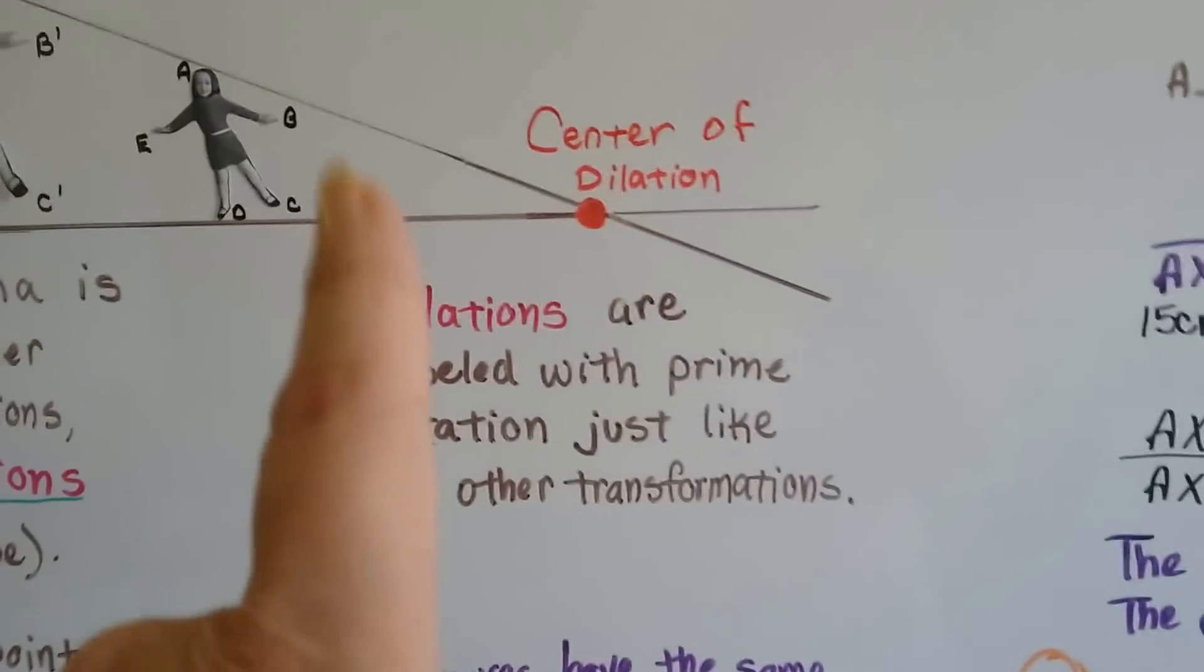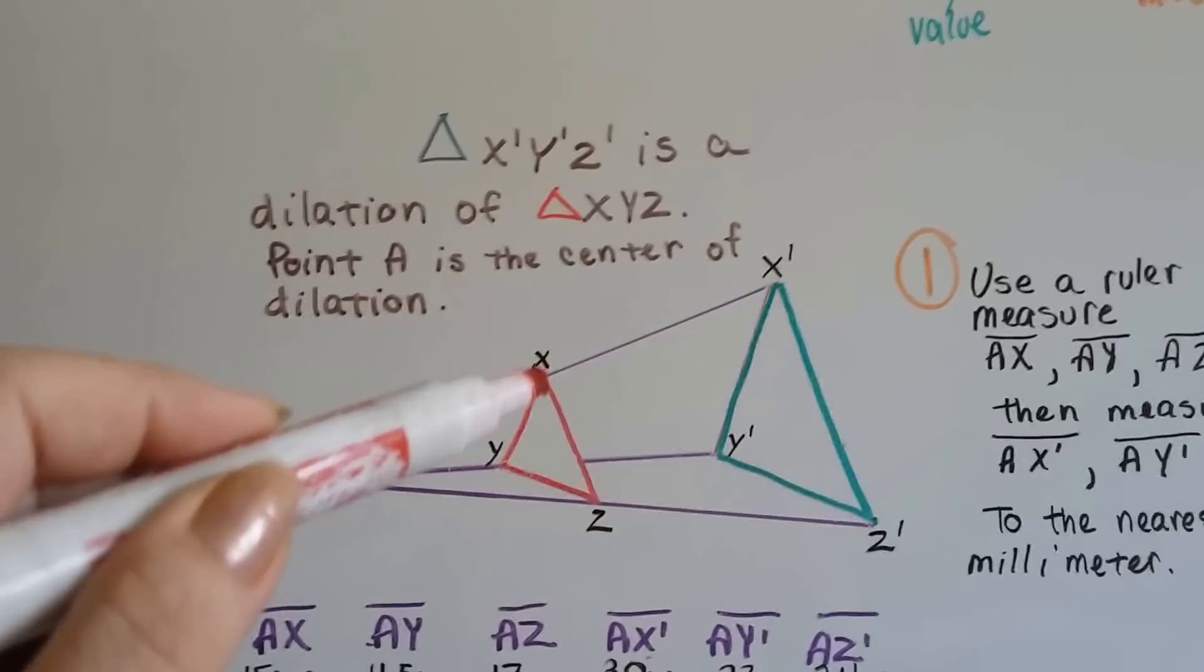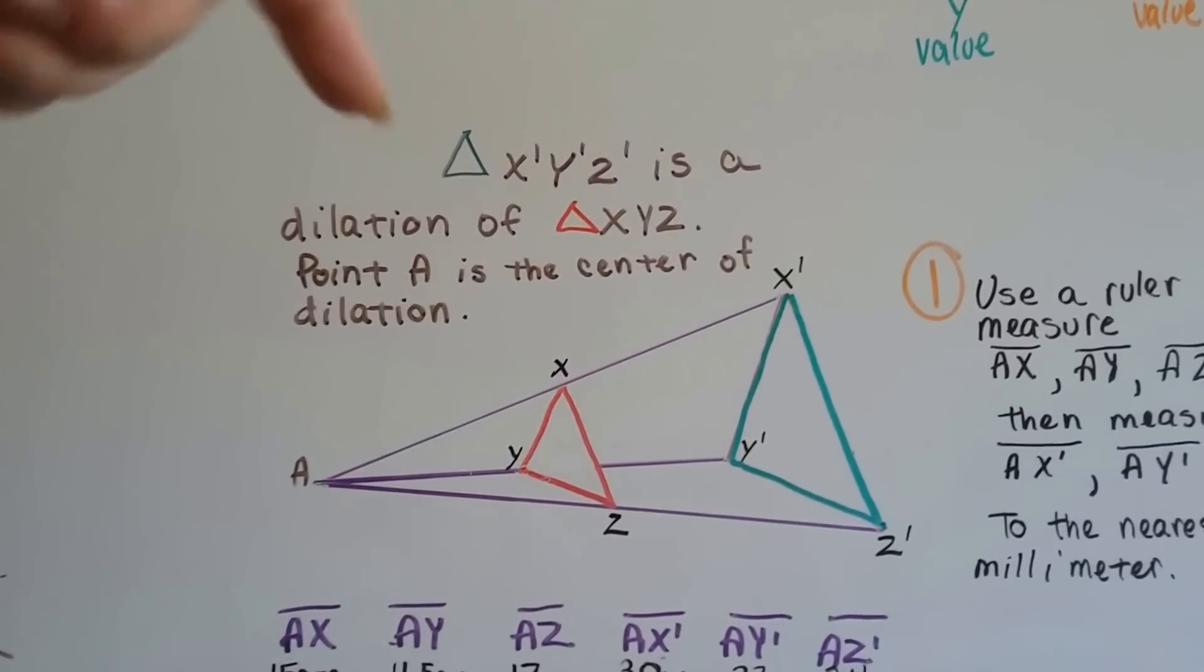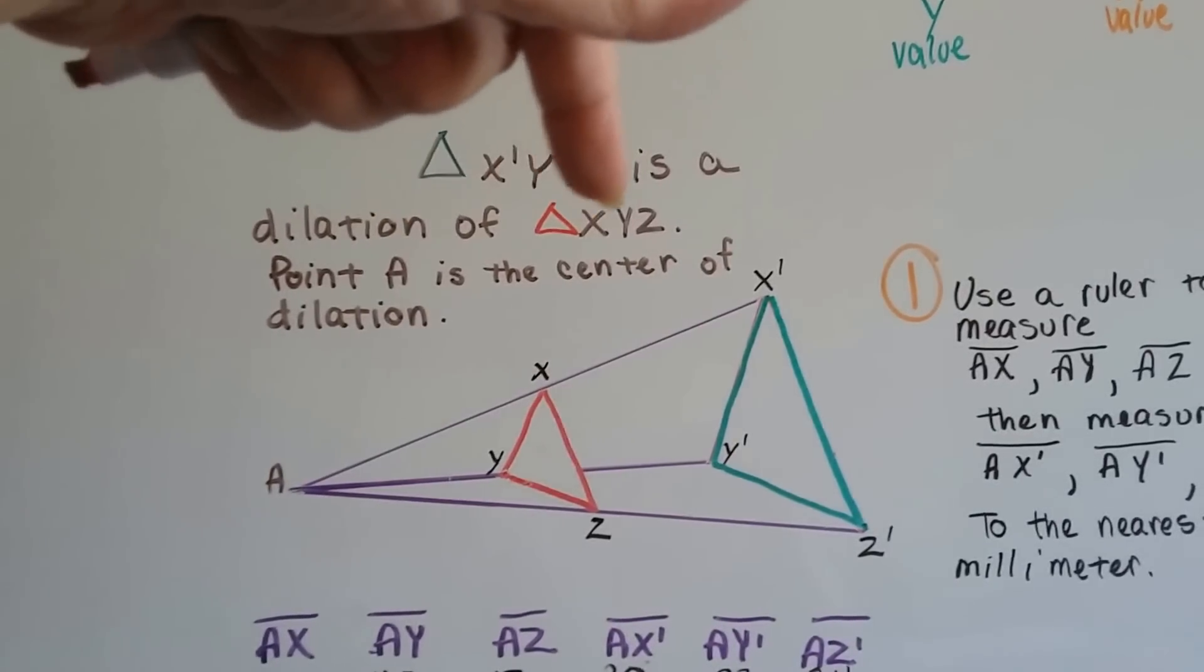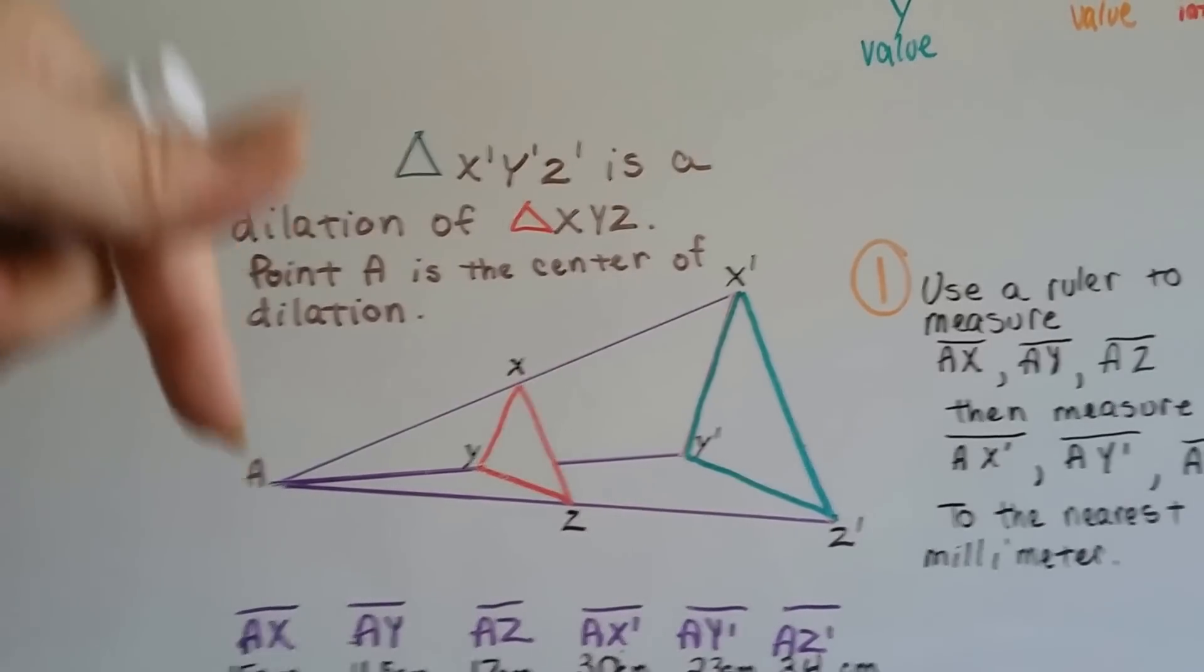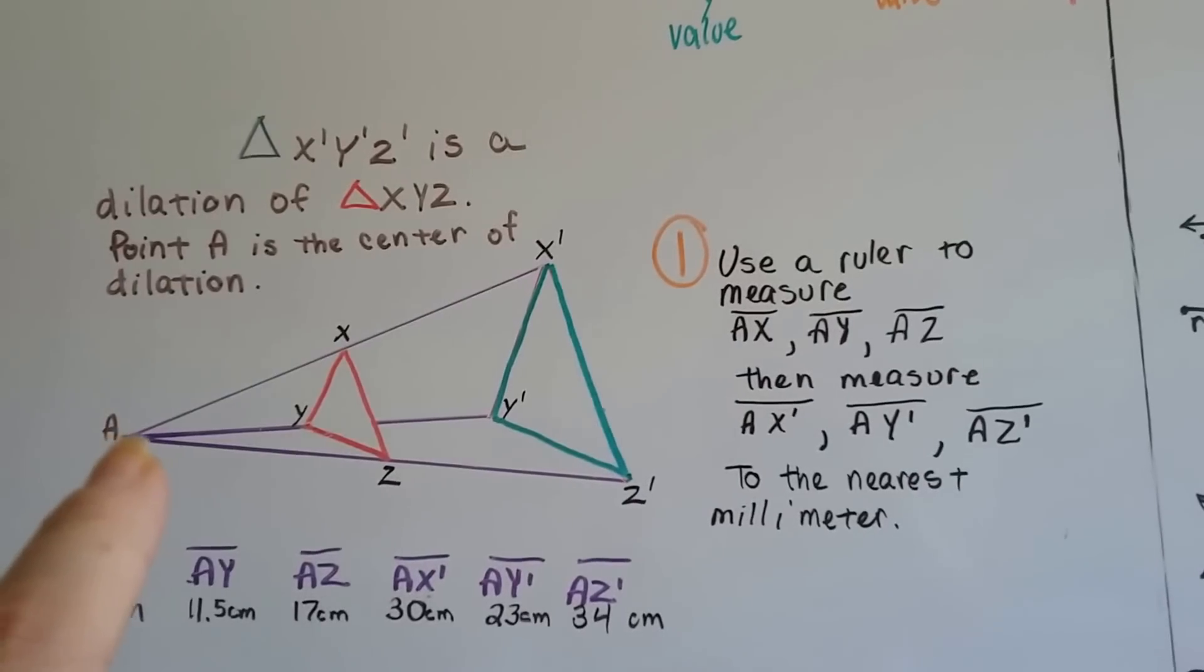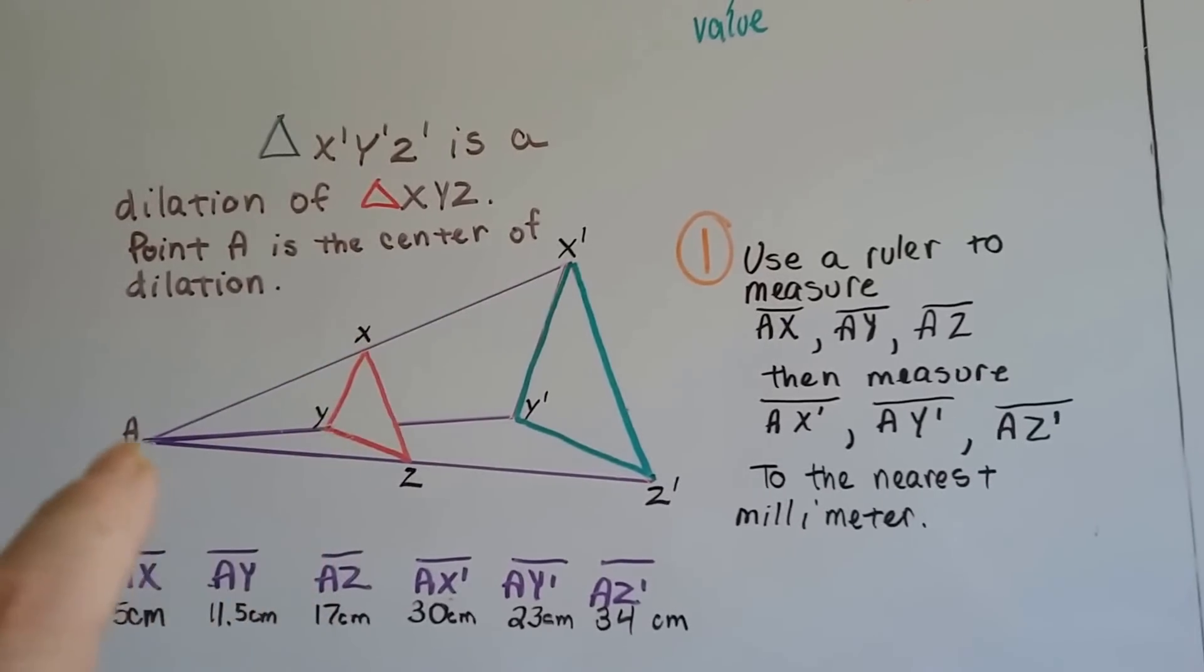So, let's take a look at these triangles that I drew here. Here, you can see triangle XYZ and X prime, Y prime, Z prime. And C, the center of dilation is right here at point A. So, triangle X prime, Y prime, Z prime is a dilation of triangle XYZ. This one is a dilation of this one. Point A is the center of dilation. So, the first thing we're going to do is use a ruler to measure the point from here to here, this line AX. Then we're going to measure AY and then we're going to measure AZ.